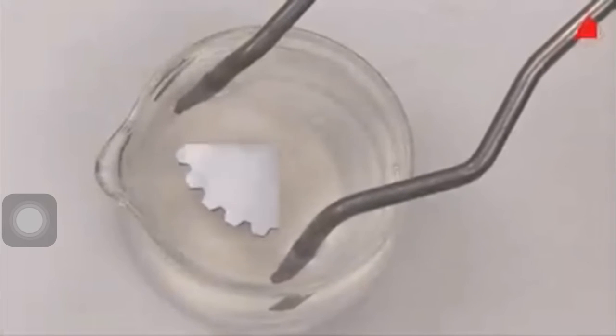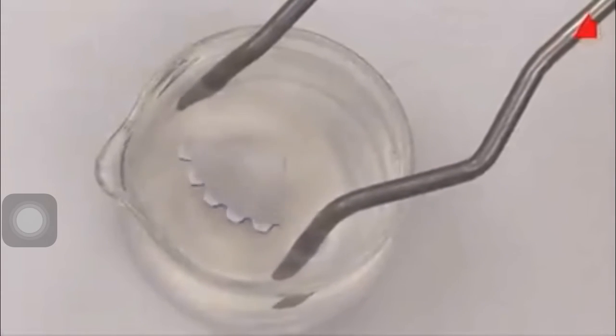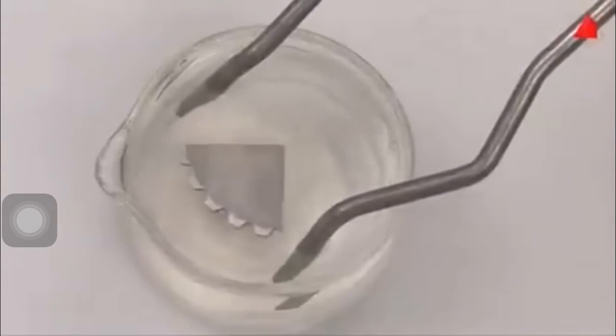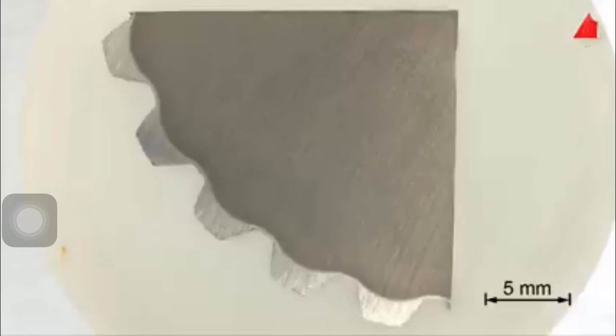This section of a splined shaft is induction hardened as well. As a result of the etching process, the outline of the hardened surface layer may easily be recognized.